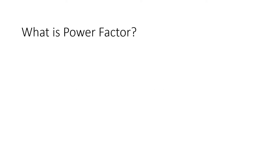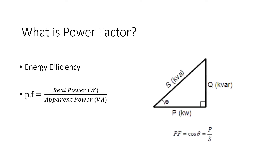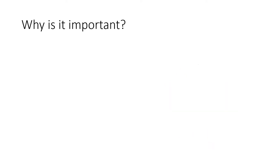What is power factor? Power factor is a measure of how effectively incoming power is used in our electrical system. It is defined as the ratio of real power to apparent power. Here we see the power factor triangle: P is the real power measured in kilowatts, Q is the reactive power, and S is the apparent power — the vector summation of real power and reactive power.